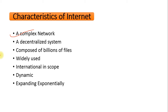Now let's look at some of the characteristics of the internet. The first characteristic is that the internet is a complex network. As the definition states, the internet is a network of networks — it consists of millions of computers which are interconnected to one another, which makes its infrastructure very complex.